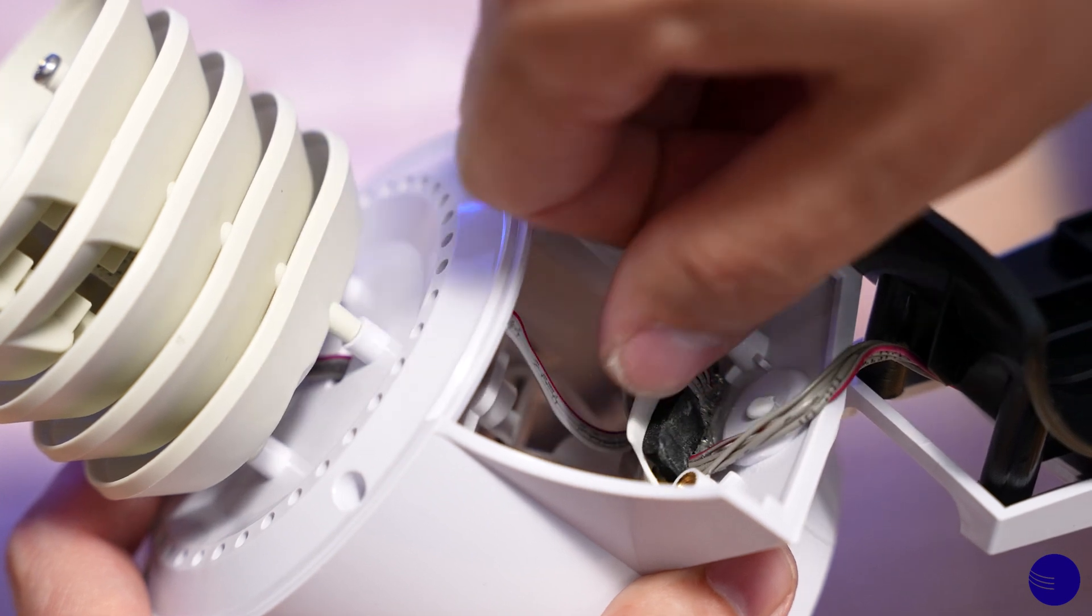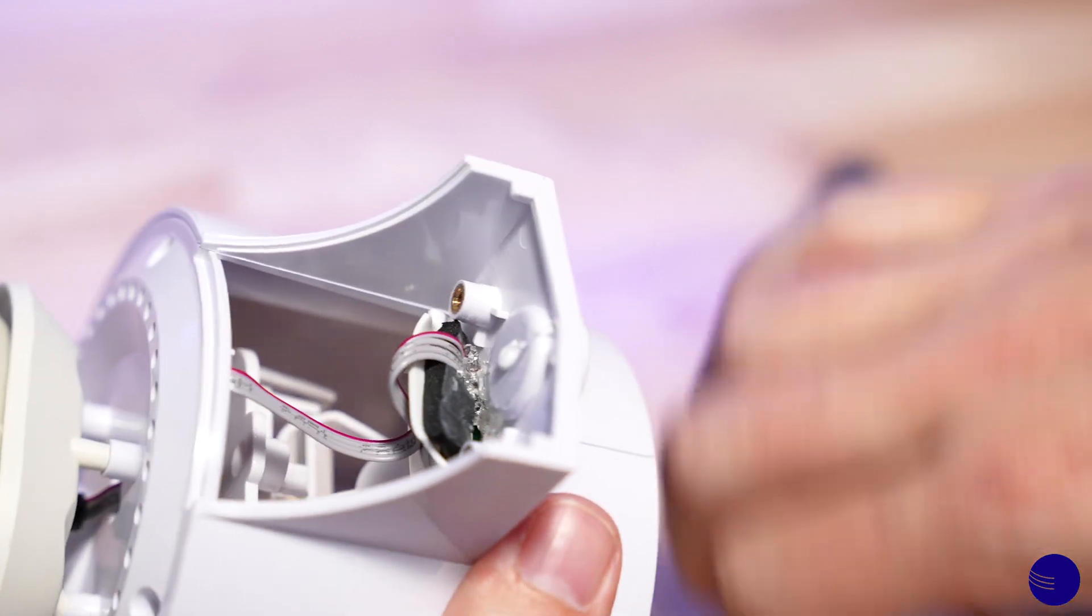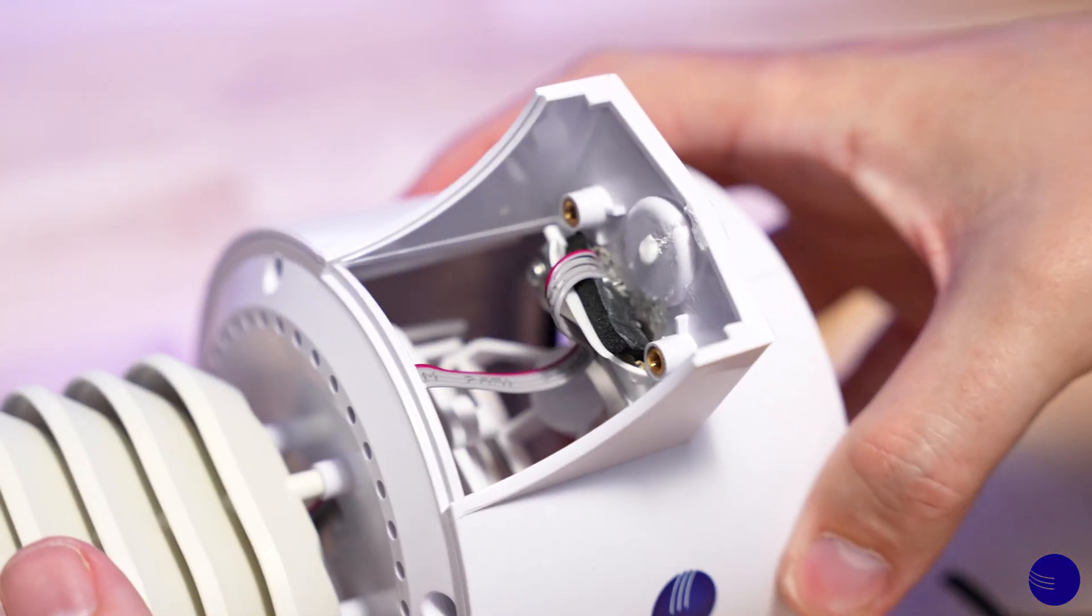We'll remove our plug here, and now we have removed the rain gauge from our WS2902 array.